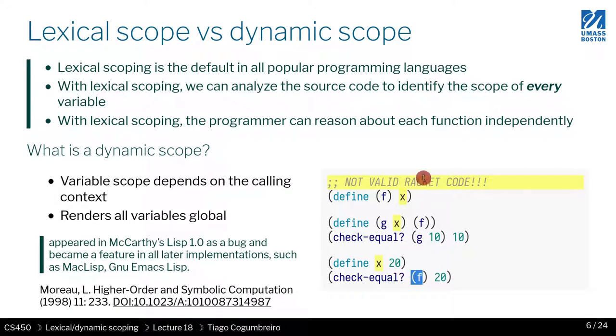To recap, with dynamic scoping when you call x, x depends on the execution. To know x, you need to know what is the closest at the point of call. When you're calling function f, you look up in the caller's context where x is defined to know the value of x.